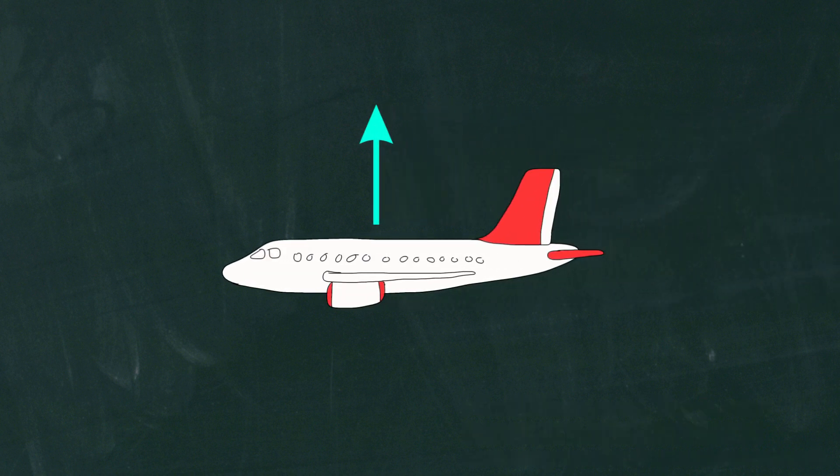There are of course also other forces acting on the airplane. Drag, for example, also known as air resistance, acts opposite the airflow. The engines provide thrust forward to counteract the drag, and the weight pulls the airplane down towards the ground.